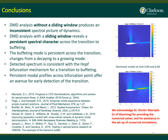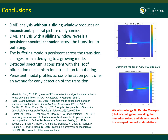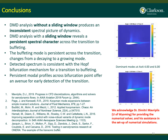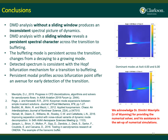In conclusion: if we do DMD analysis without a sliding time window, it produces inconsistent spectra. Using the sliding window method, we can capture persistent spectral characteristics and identify the persistence of the buffeting mode transitioning from decay to growth. Our sliding window method generates a spectrum consistent with the Hopf bifurcation mechanism for transition to buffeting. Using this persistence of modes, we can perform early detection of bifurcation. Thank you very much — if you have any questions, please ask.